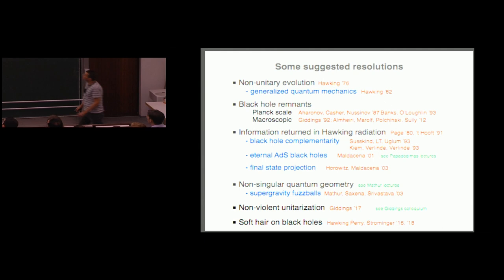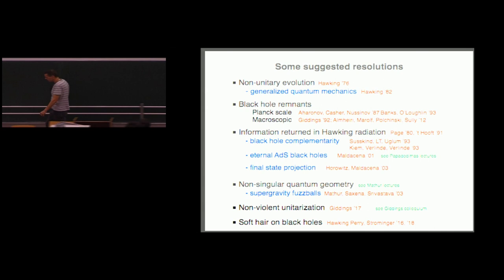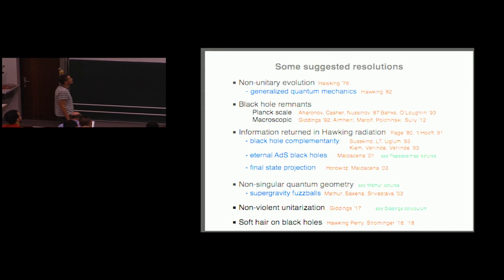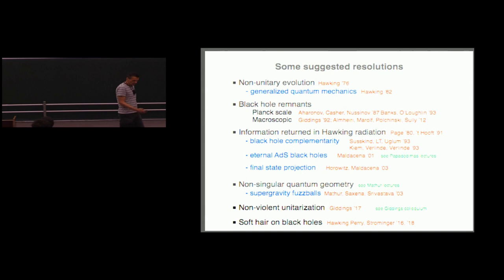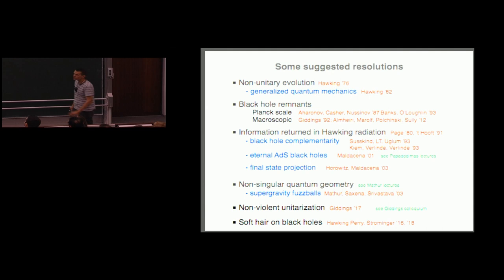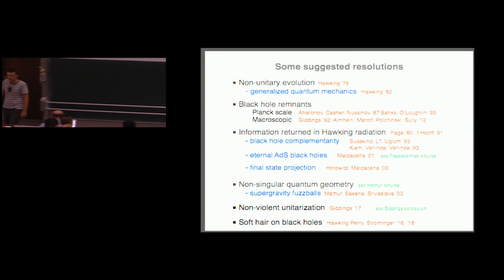Another possibility Kyriakos mentioned: the information goes into the black hole but stays there, and at the end of the day you have a remnant carrying all the initial information. That's a logical possibility, until you examine more closely what it would entail when you really try to implement it. We need to distinguish whether this remnant is a very small-scale object left behind after semi-classical evolution completes, or whether some effects will actually halt the semi-classical evolution.